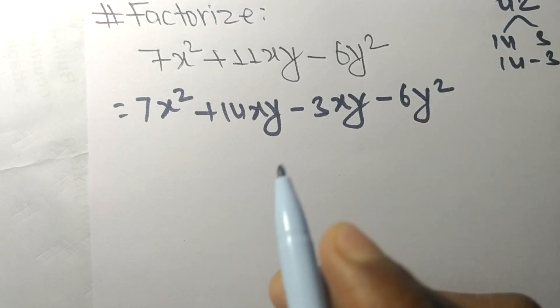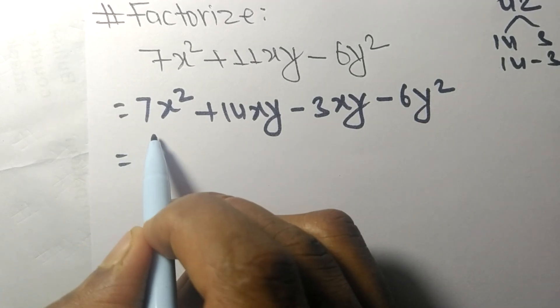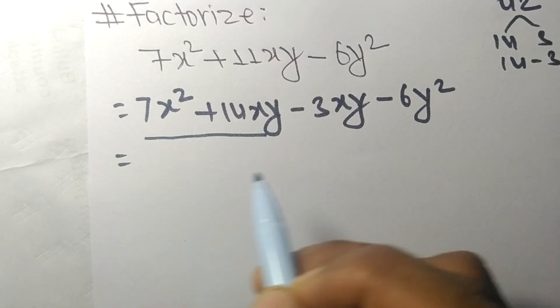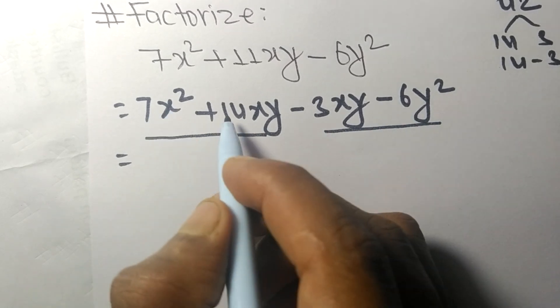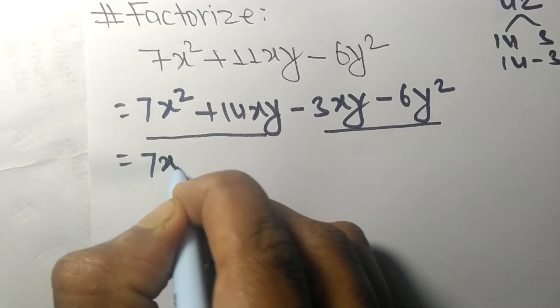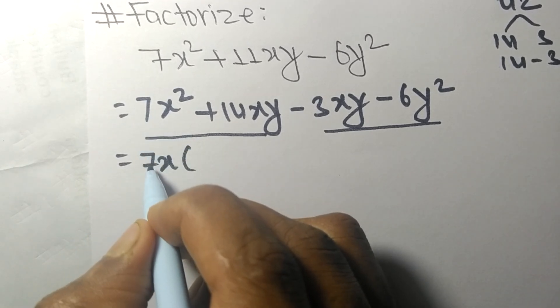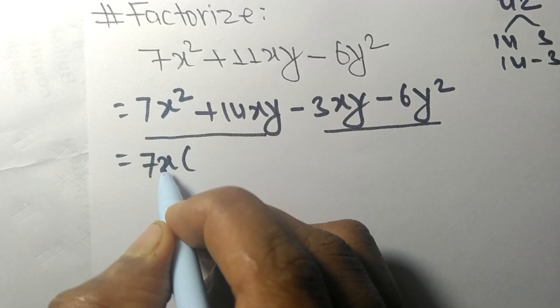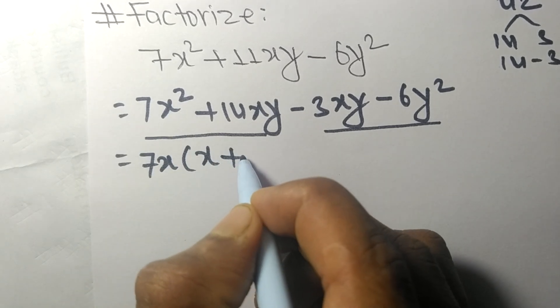Now we find the common factor in the first pair and the last pair of terms. Here the common is 7x, so the remaining is x + 2y.